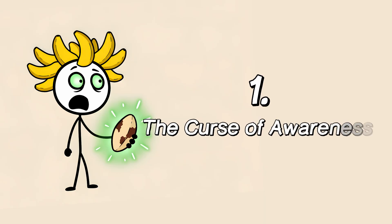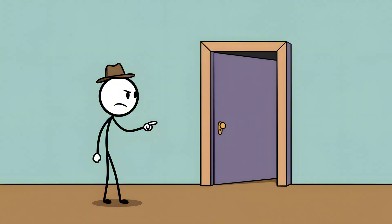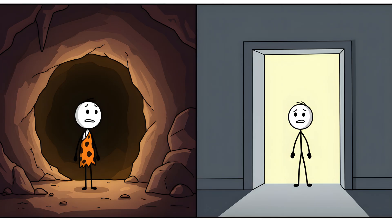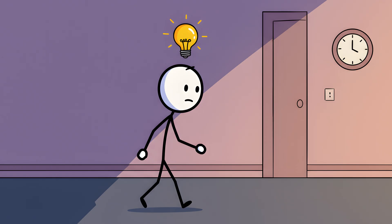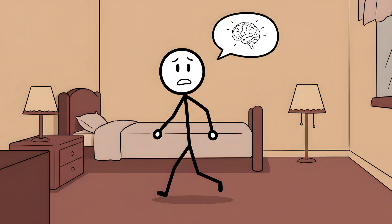Number one, the curse of awareness. So here we are. We know the culprit is the doorway effect or the location updating effect. We know it's triggered by event boundaries that tell our brain to archive old information to make way for new. We know it's a byproduct of an ancient survival mechanism designed to keep us alert in new environments. A mechanism so powerful it can be triggered by a doorway in a video game or even a stray thought in our own heads. And now you know all of this. You are armed with the knowledge. You are cursed. Because the next time it happens, and it will happen, probably in the next ten minutes, you won't just be confused. You'll be aware.